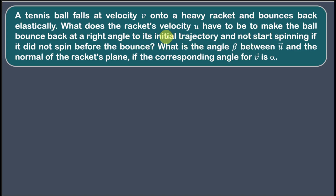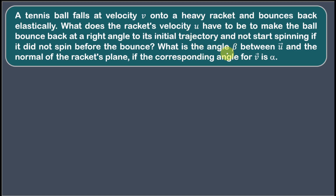What are these conditions? The first condition is that after the collision with the racket, the ball actually changes its direction of motion by 90 degrees — it bounces back at right angle to its initial trajectory, meaning the velocity vector has changed by 90 degrees. One also crucial important thing is that if the ball was not spinning before hitting the racket, it would again not start spinning. So before the collision it was not spinning and after the collision also it will not spin.